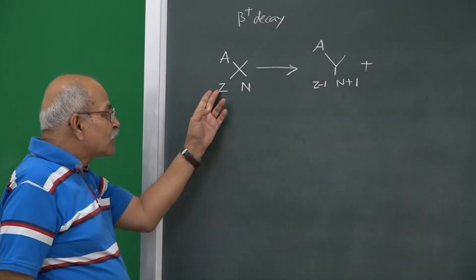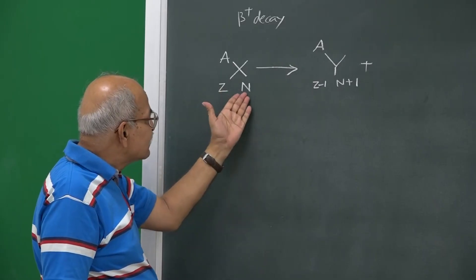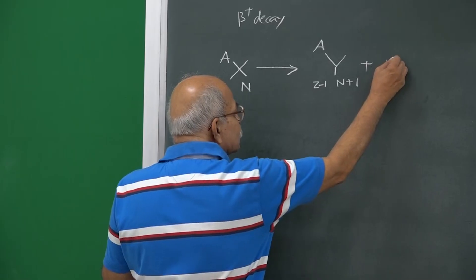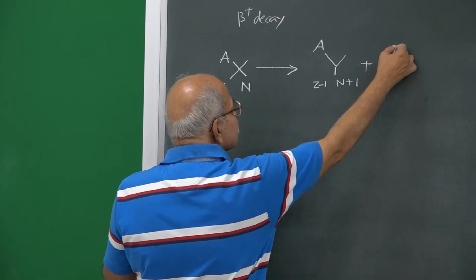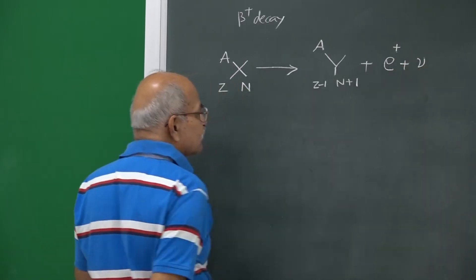One proton is converted, so Z becomes Z minus 1 and one neutron is created, so it becomes this, and then it is E plus here and then you have a neutrino. There is the complete reaction.